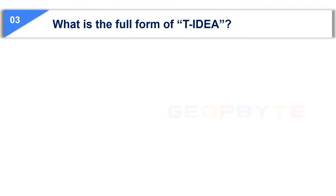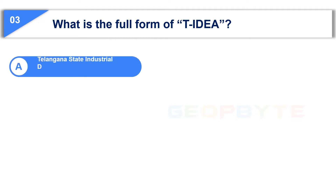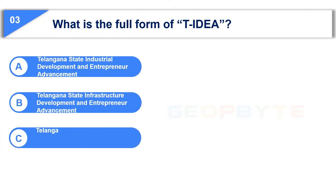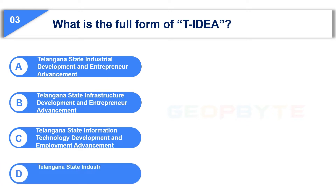The third question is: What is the full form of TS-IDEA? Option A: Telangana State Industrial Development and Entrepreneur Advancement. Option B: Telangana State Infrastructure Development and Entrepreneur Advancement. Option C: Telangana State Information Technology Development and Employment Advancement. Option D: Telangana State Industrial Development and Employment Advancement.